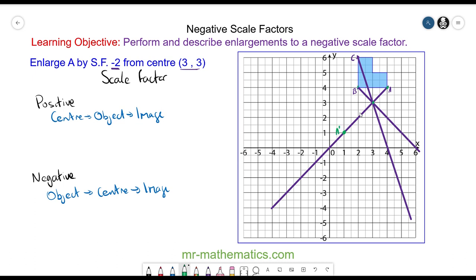Vertex B is the same so that will enlarge to here and vertex C we're going to go 3 down and 1 across. We'll do that 2 more through the centre so that will go here.